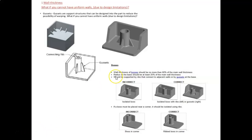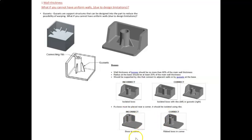We can also put bosses in your design. The wall thickness of bosses should be no more than 60% of the main wall thickness, and the radius at the base should be at least 25% of the main wall thickness. Bosses should be supported by ribs that connect to adjacent walls or by cassettes at the base. An isolated boss is shown here, and an isolated boss with ribs or cassettes is shown next. If a boss must be placed near a corner, it should be isolated using a rib. The support at the bottom is called a cassette, and the side support is called a rib.